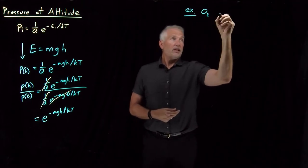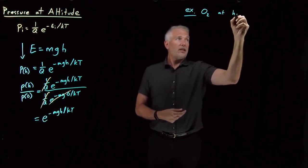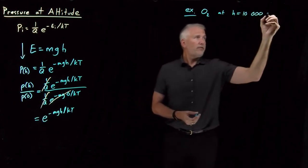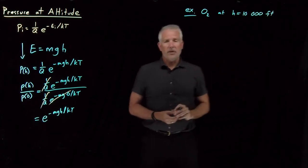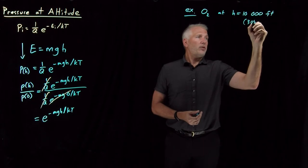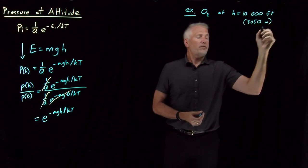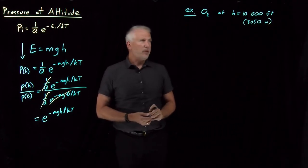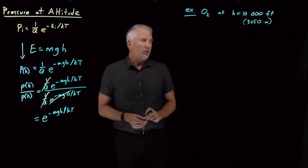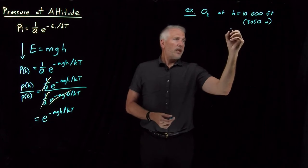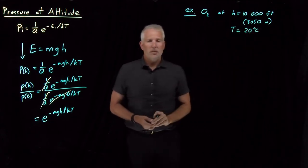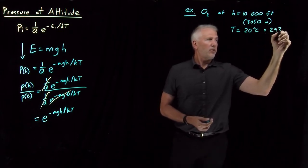If I say I'm at an altitude of 10,000 feet, some mountain out in Colorado, for example, and we're going to want to do this in metric units, of course. So 10,000 feet works out to be 3,050 meters. The other information I have to give you is the temperature. So if it's a nice pleasant day with a temperature of 20 degrees Celsius or 293 Kelvin,